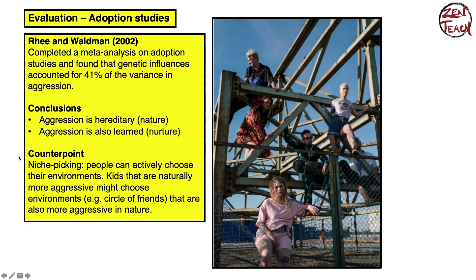A counterpoint to this is something called niche picking. Suppose a kid is adopted into a family that is pacifist or doesn't show a lot of aggression, but the kid carries genetic factors that make them naturally more predisposed to aggression — they might seek out friends who are also more predisposed to aggression. Because kids can choose their environment, when we measure the effect of nature and nurture on aggression we may not get accurate data, since we can't control for the environment these kids will choose.